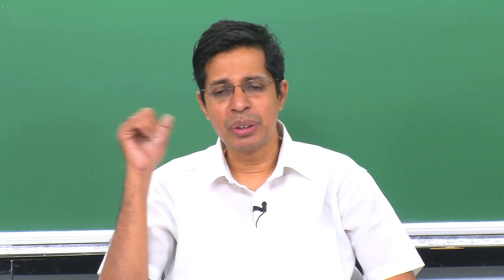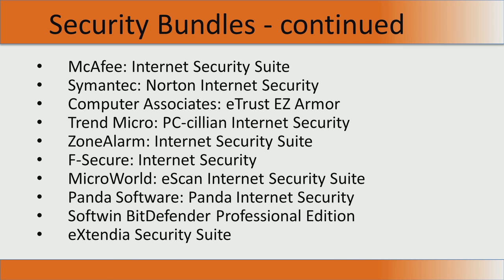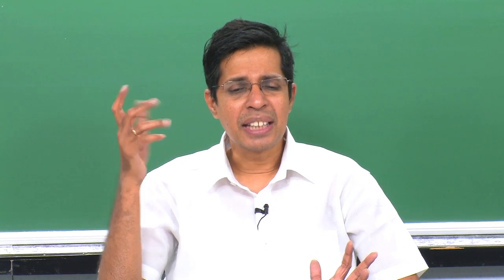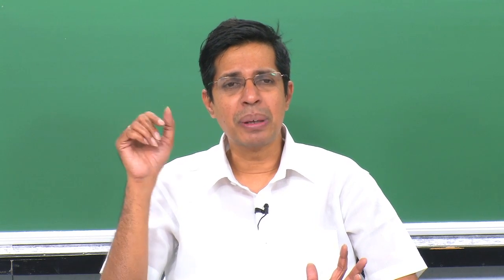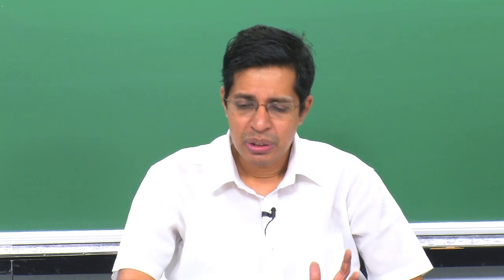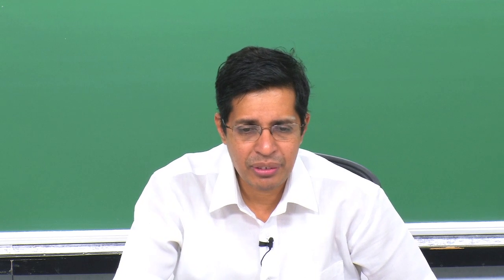Many security bundles exist — McAfee, Symantec, Computer Associates, Trend Micro, Zone Alarm, F-Secure, Microworld, Panda Software, Softwind BitDefender Professional Edition, and Estendia Security Suite. Many such products exist as security bundles which can be used to get the desired level of security.